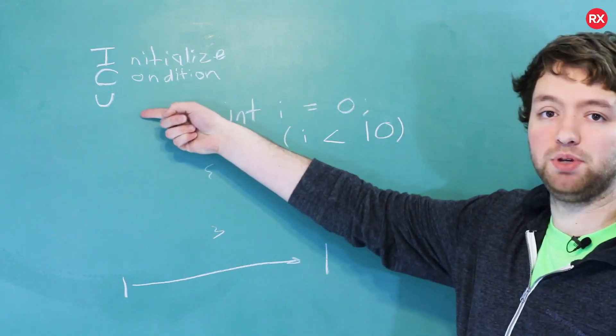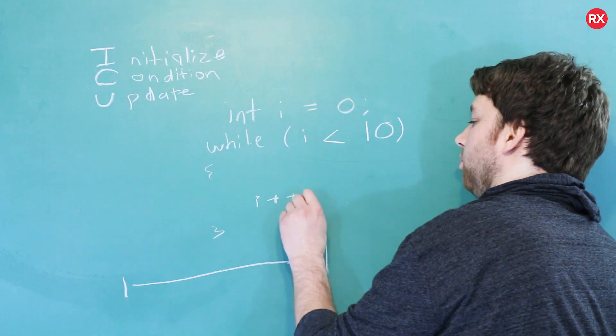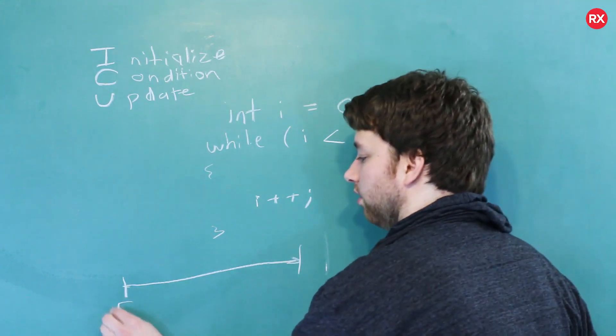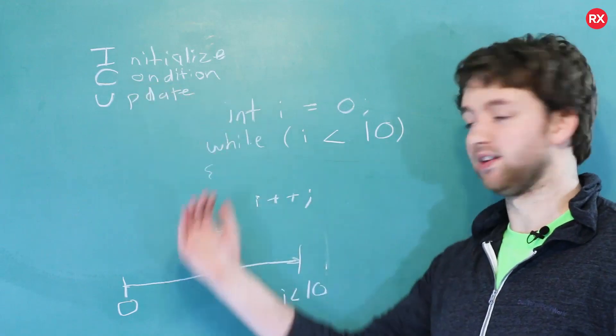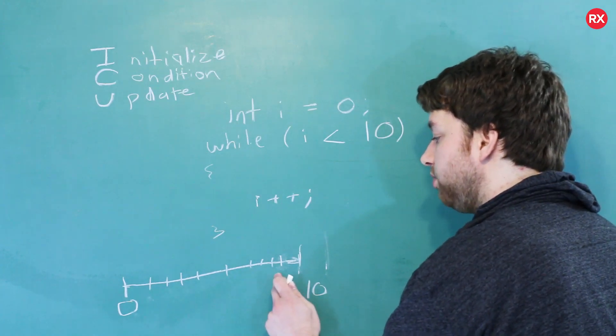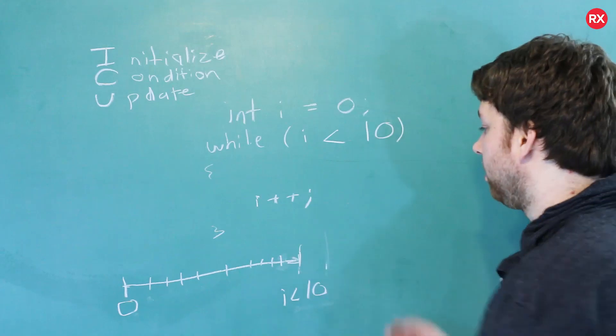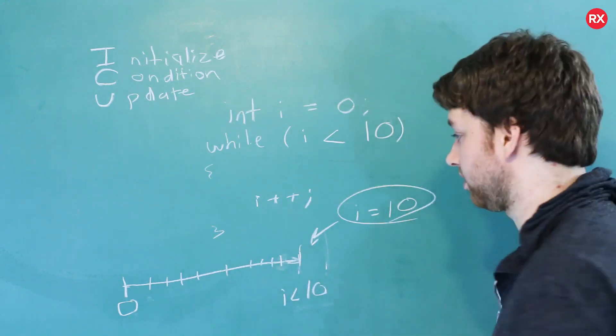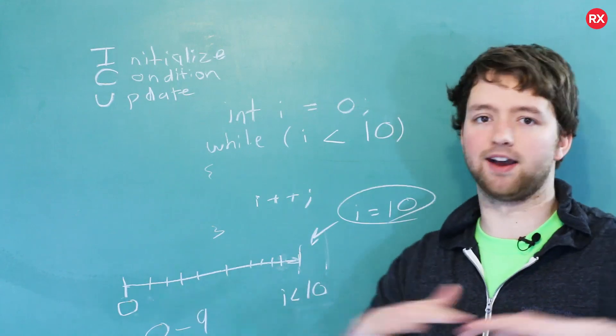Then inside of here we have that last piece, the U, and it's the update. That usually looks something like i++, which will increase i by one number. So the way this is going to work is we start with an initialization, in this case zero, and we go until the condition i is less than 10, so as long as that's true. And the update is the progress, how we get there. We start at zero, we update by one each time, and we keep doing that as long as i is less than 10. Once i is 10, we're done.